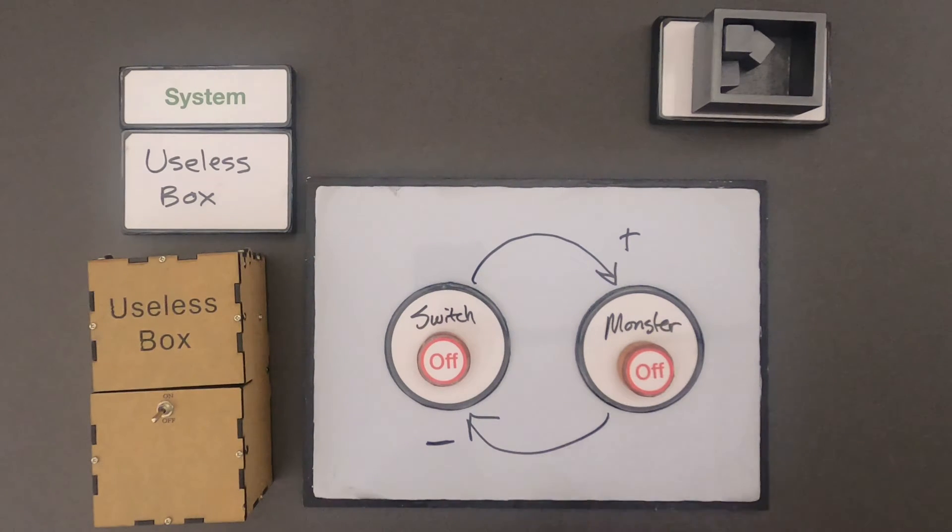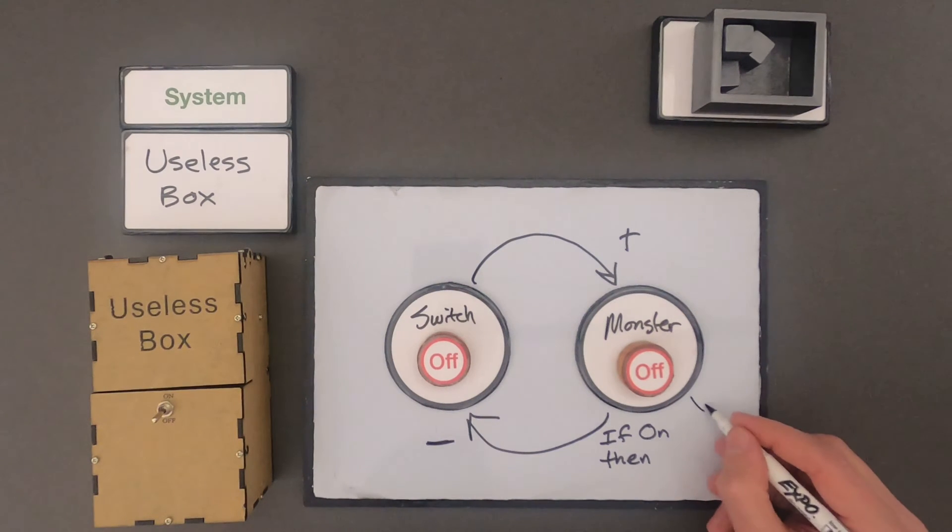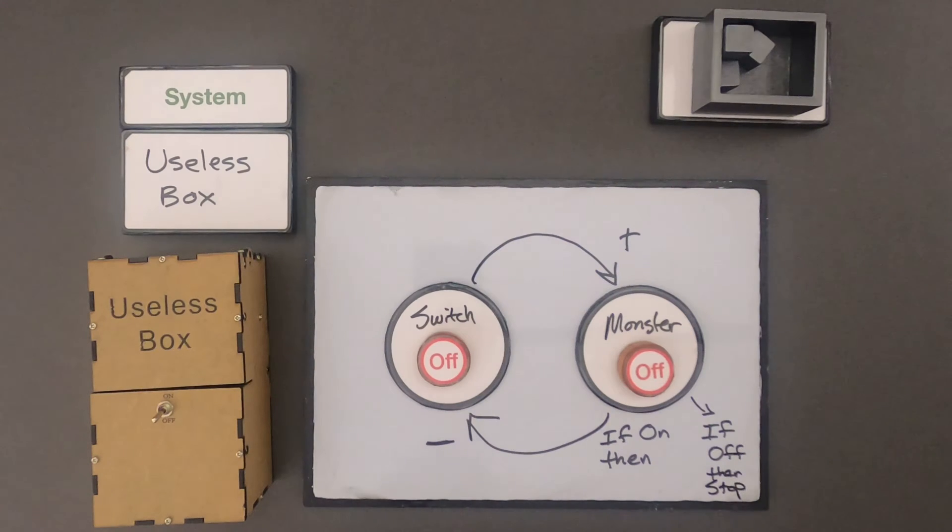So it looks like there has to be something to tell the monster to turn off or not. And so a way to do that is to put an if statement. So I could say, if the monster is on, then turn the switch off. But if the monster is off, then stop. So this is just some logic.